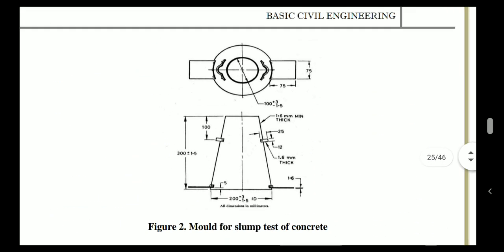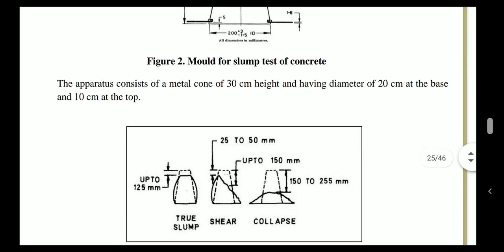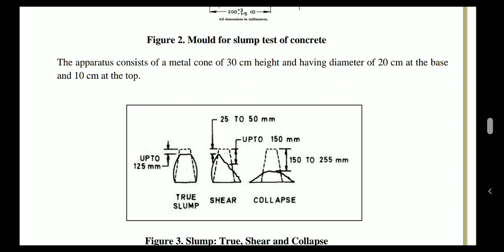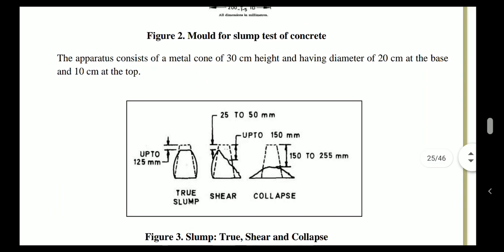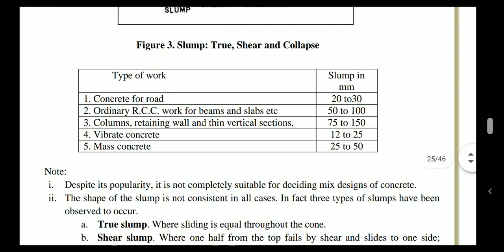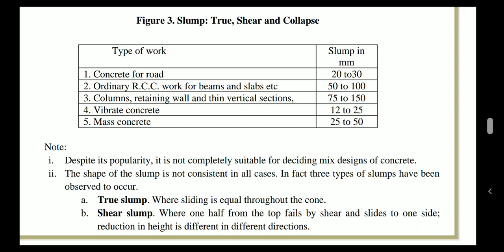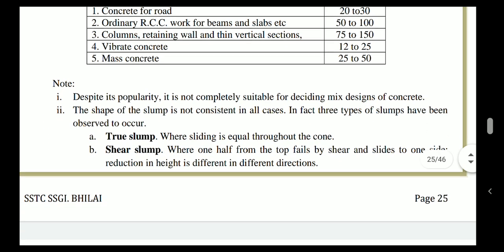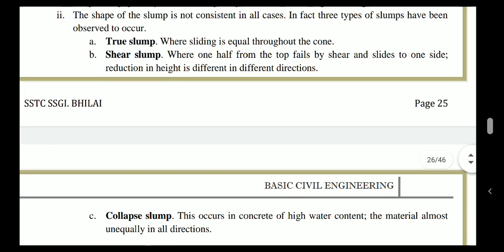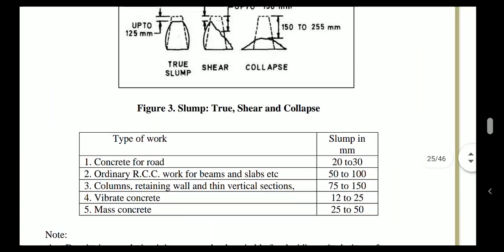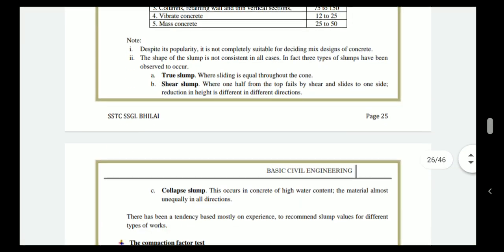As shown in the diagram, each layer is stamped 25 times. After the concrete is stamped, you lift the mold vertically upward and measure the subsidence — that is, how much the concrete settles after removal of the mold. This settlement is known as the slump. Different slump values are required for different types of work: for road work 20–30 mm, ordinary RCC work 50–100 mm, columns 75–150 mm, and so on. The slump is also classified by its shape, such as true slump.